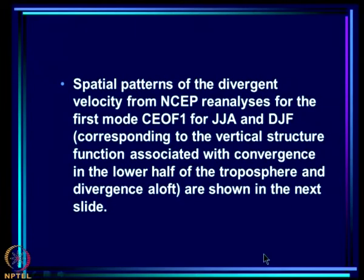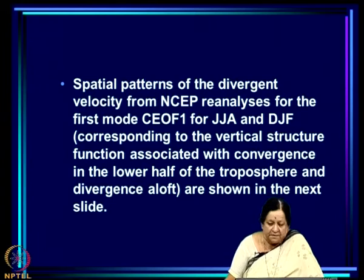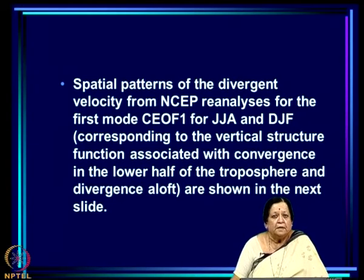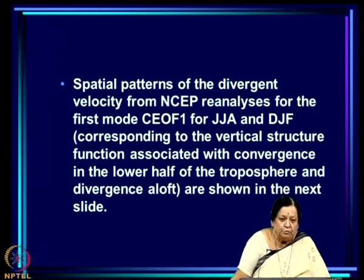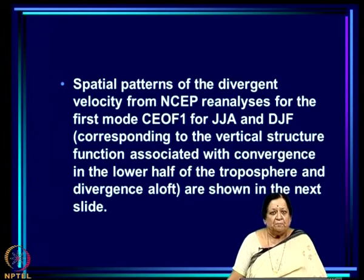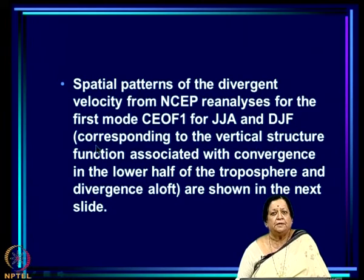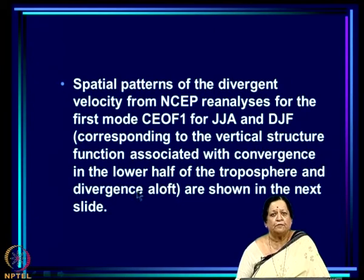There is a second mode — CEOF 2 — which Trenberth et al. never mention as a heat low, but to us it is clearly a heat low: convergence restricted to below 2 kilometers and divergence aloft. This corresponds to a very shallow cell not extending beyond 2 kilometers — exactly what we described as a heat low. The second mode corresponds to a shallow lower-tropospheric overturning cell accounting for 20 percent of the mean annual cycle of the divergent wind. This mode corresponds to the heat low in the literature; the first mode is called a dynamic low simply to distinguish it.